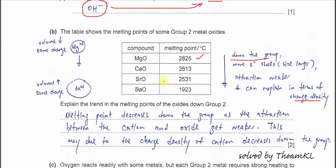What is charge density? Going down the group, the Group 2 cation size is larger. For example, magnesium ion and barium ion differ in size but the charge is still the same — 2 positive. Magnesium ion size is smaller but the charge is still 2+, so the charge density of magnesium ion is actually higher than the others. You can explain this using charge density.